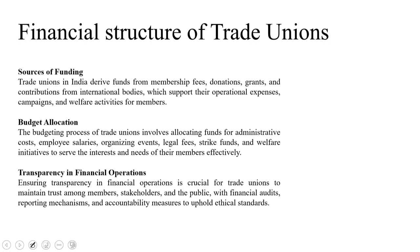One factor that would establish the future growth of trade unions is their financial structure, which should be seen from different aspects: sources of funding, budget allocation, and transparency in financial operations. Trade unions in India derive funds from membership fees — the topmost source of income — as well as donations from individuals, other unions, or sympathetic organizations, and grants and contributions from international bodies, which support operational expenses, campaigns, and welfare activities.